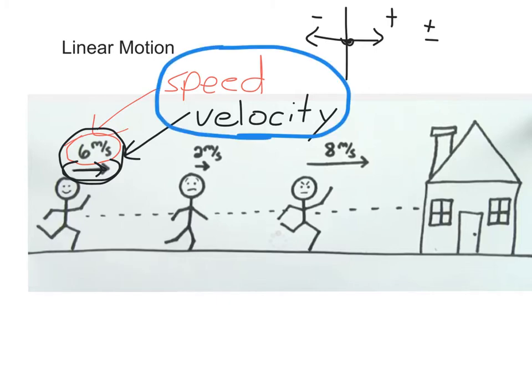These two measurements, the speed and the velocity, are both instantaneous measures. And you can see the word instant in instantaneous.